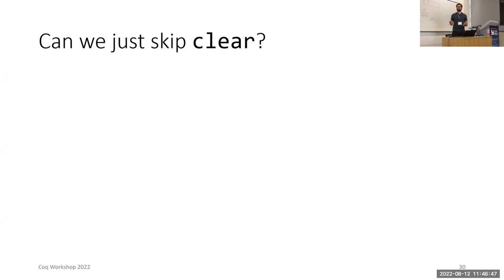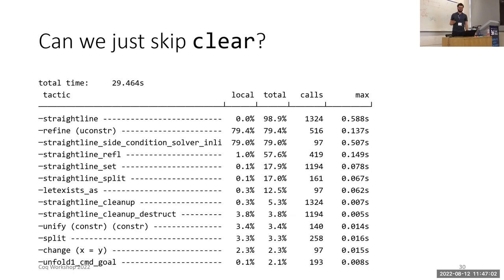The next obvious question is can we just skip clear, because if you remember we had it only for performance reasons. And indeed we can, but it will come back to bite us later. After removing clear and doing some other performance optimizations, I cut the time in approximately half and got this profile. The thing to notice here is refine. Refine is taking up 80% of the time almost. And the thing that refine is doing in our proof is a variant of reflexivity.